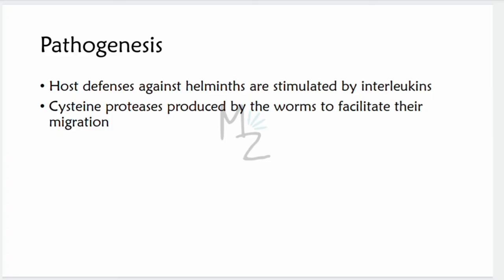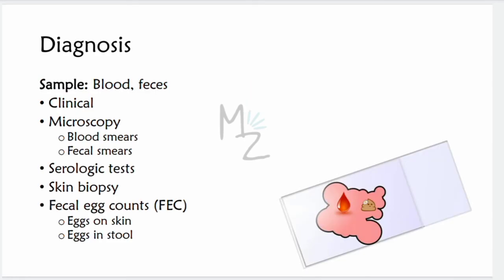Key points: interleukin-5 is responsible for increasing eosinophil numbers, and interleukin-4 is responsible for IgE production. For diagnosis, samples of feces and blood are needed. Diagnosis is mainly clinical, but microscopy is used to visualize blood and fecal smears. Serologic tests are done for certain nematodes like Trichinella. Skin biopsy is important for nematodes like Onchocerca. Fecal egg counts are performed, and eggs on the anal skin (perianal swab) are also examined.